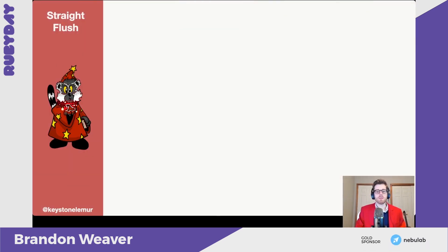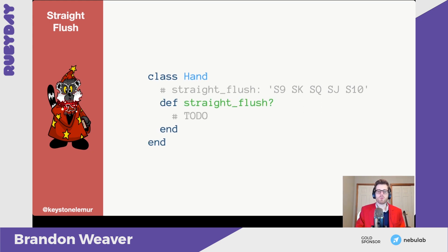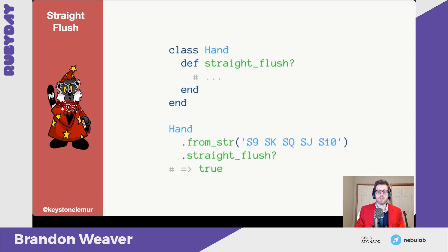That brings us to our next hand: a straight flush. A straight flush is both a straight — meaning all cards are one rank apart — and a flush, meaning all of the same suit. Going back to our hand, a straight flush method might actually surprise you. It's quite boring — we just check if it happens to be a straight and also a flush. Nothing says we need any more new code. Testing our example, we find that it does indeed return true.